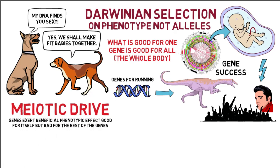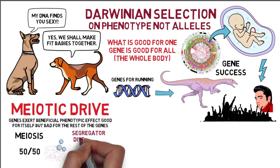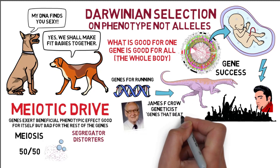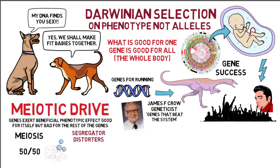The process of meiosis is usually fair. On average, half the sperm or egg contains one allele, and the other half contains the other allele. Mutant genes called segregation disorders, or as geneticist James Crow termed, genes that beat the system, act on meiosis to make one allele more common and therefore spread across the population, even if this is detrimental to the other genes and bodily welfare.